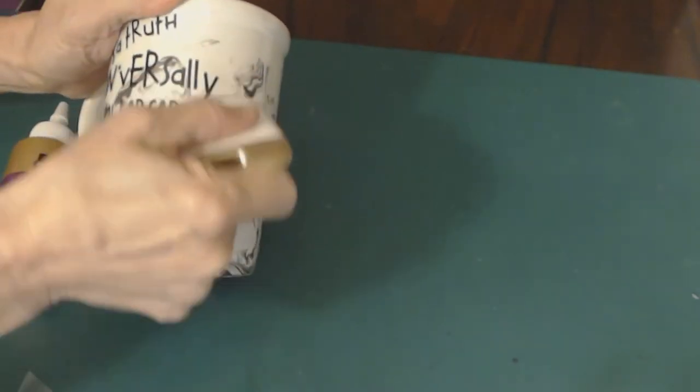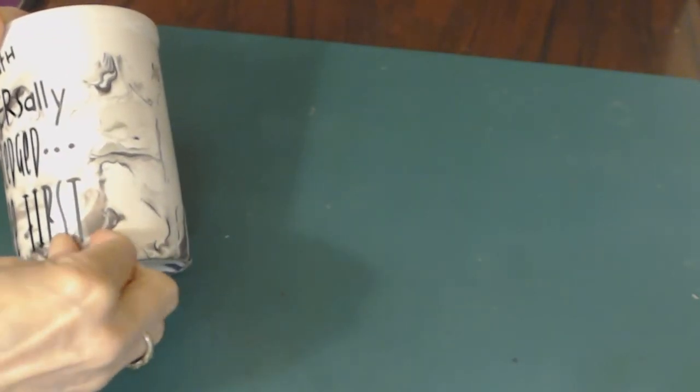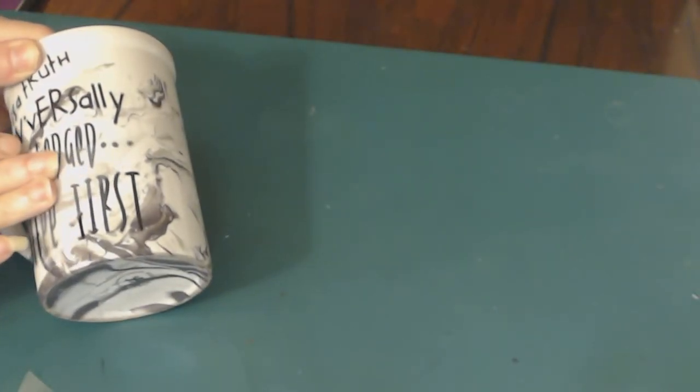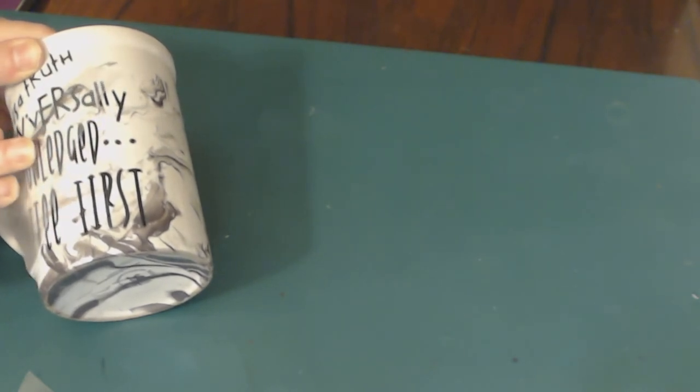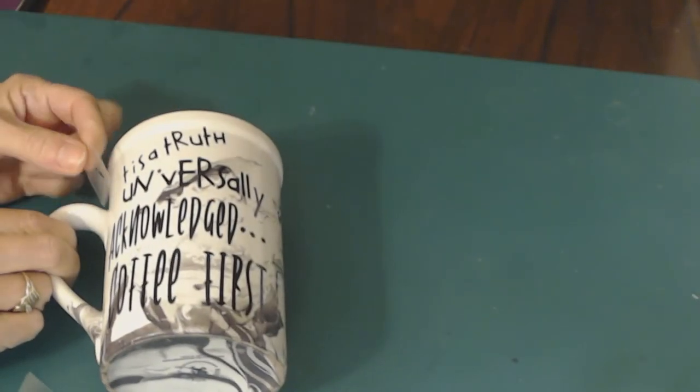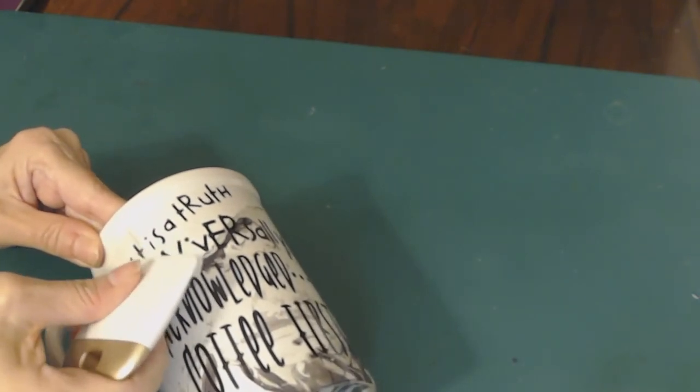I'm going to smooth it from the middle to the outside of our design. Make sure you remove all the air bubbles. I just think that saying is so cute. 'It is the truth universally acknowledged, coffee first.' I'm going to come to one corner, come up on an angle, and just lightly bring it up to remove the transfer tape. That looks beautiful, very good. I'm missing an eye. That's what I like about vinyl, you can always come back and fix it.